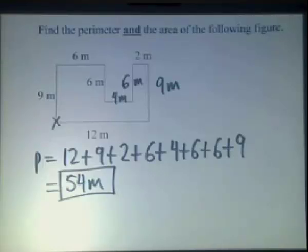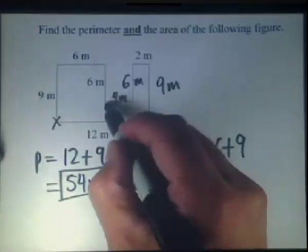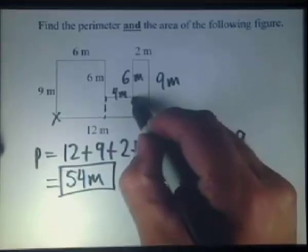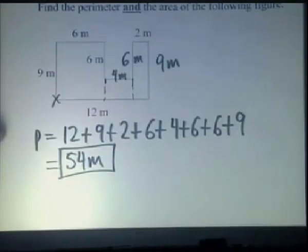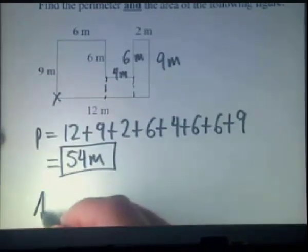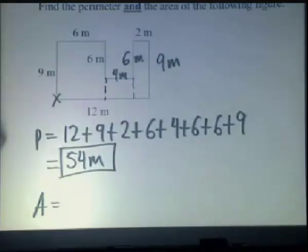Now, in terms of the area, we want to cut this up into three rectangles. You can cut it a number of different ways. We're just going to cut it vertically, like so. So the area will be the sum of three rectangles.